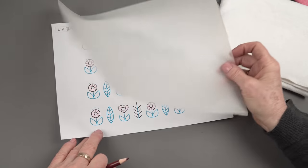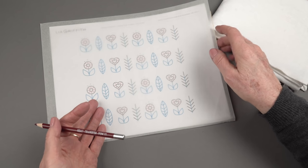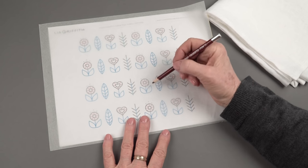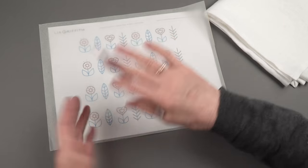In the tracing paper you put it over the top of the design and you use the pencil. The pencil irons on. That's one way to do it.